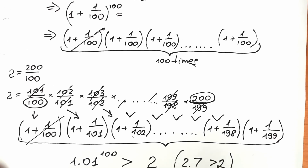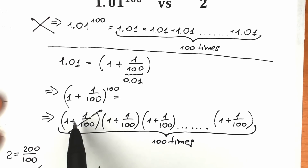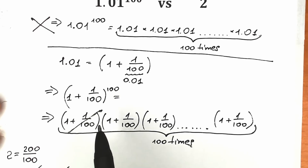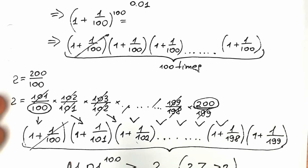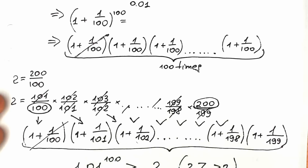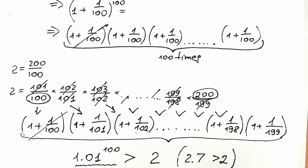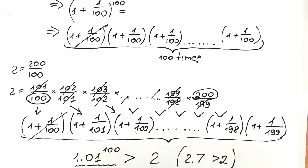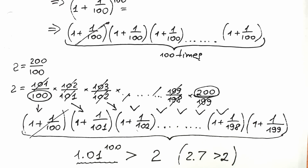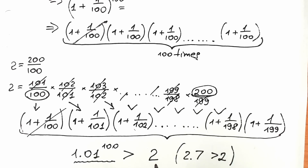I hope you understand this approach and learned something new. We expressed 1.01 as a fraction (1 + 1/100), which helps a lot — it's easier to work with fractions than decimals for this comparison. We rewrote both sides as a product of 100 expressions of the same type: 1 plus a fraction. That made it really convenient to compare the two expressions. This is a little bit of a tricky approach, but that's how it is — I found it and wanted to share it with you.